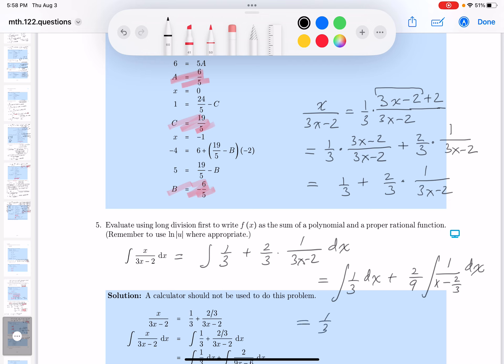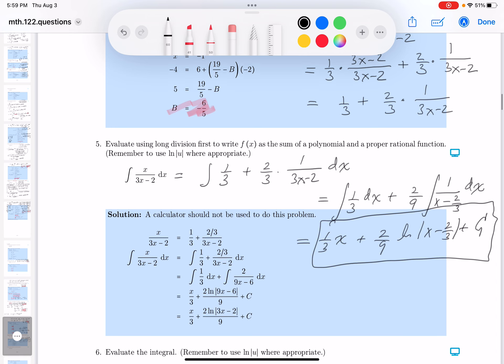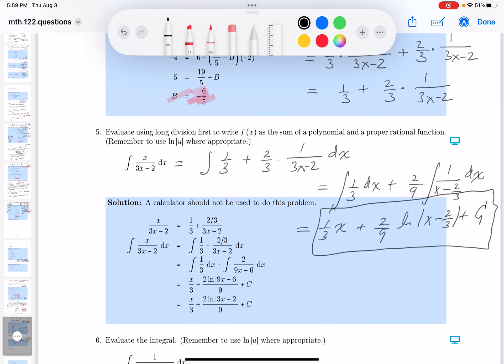One third x plus two-ninths natural log absolute value x minus two-thirds plus c. By the way, that's a fine answer. You might be surprised, though, when you look at an answer key, that's not the answer they got. So I want to go through that with you. All right. I want to go through that detail with you.